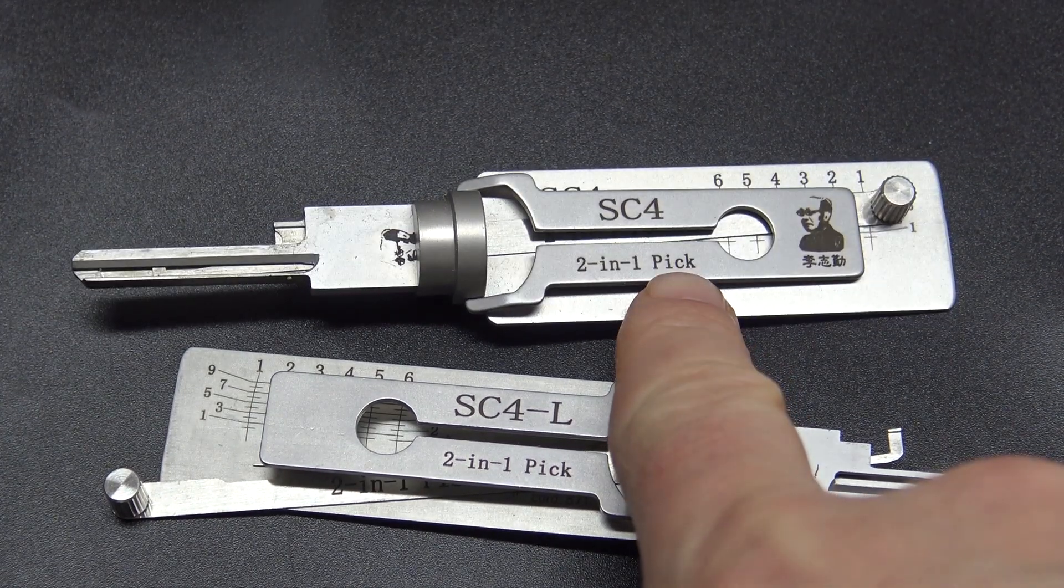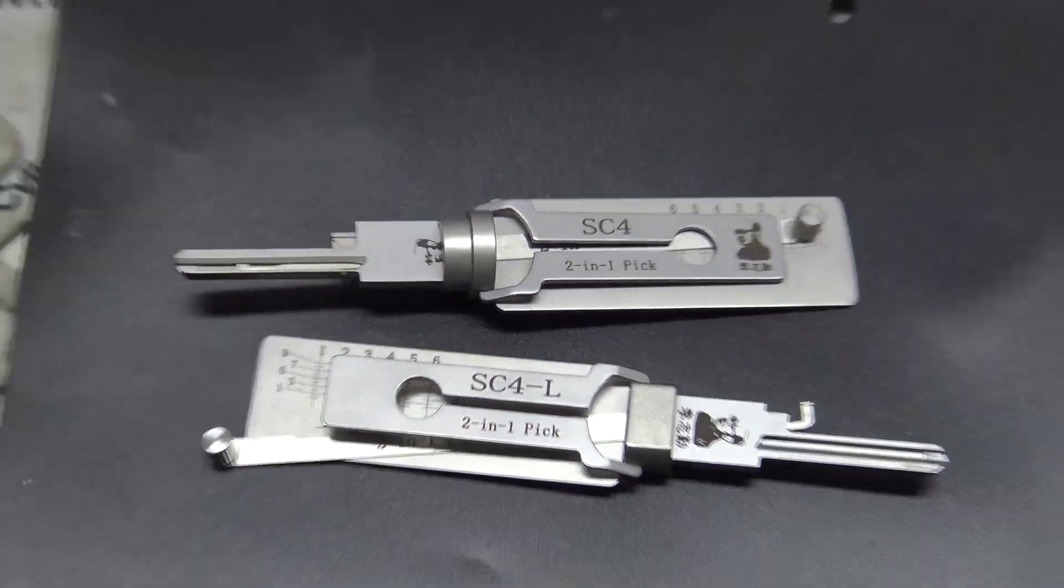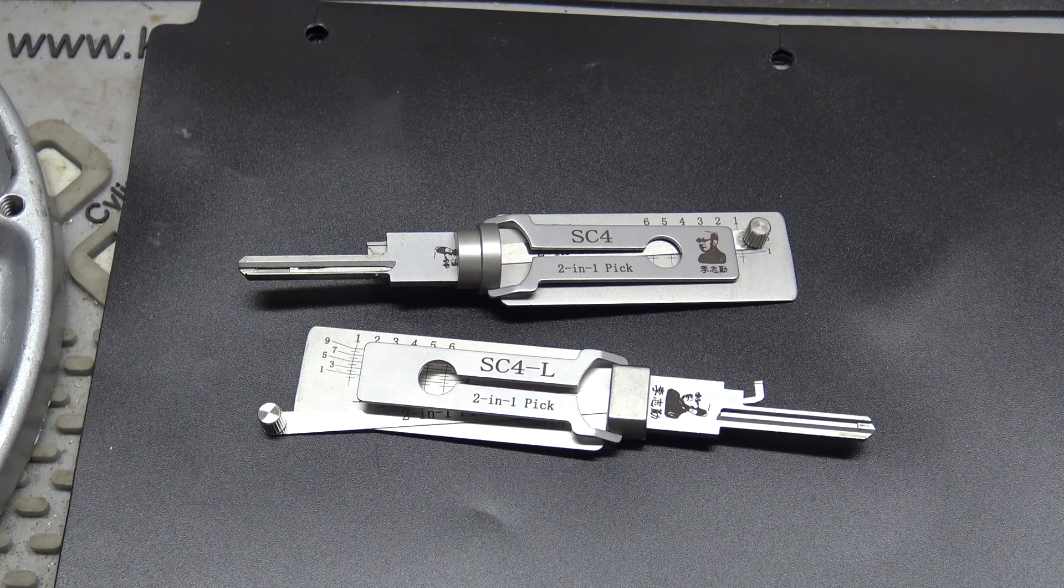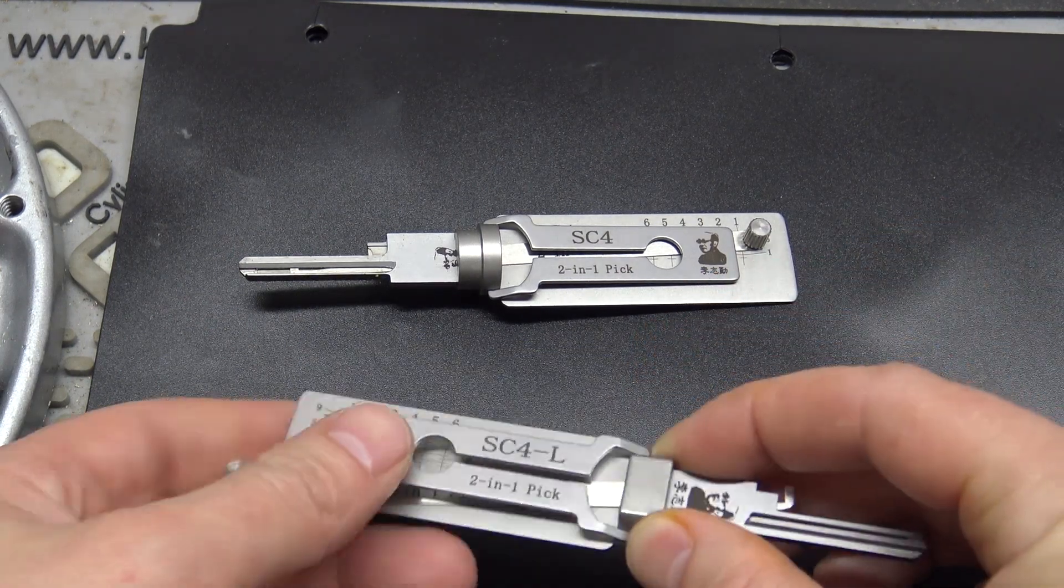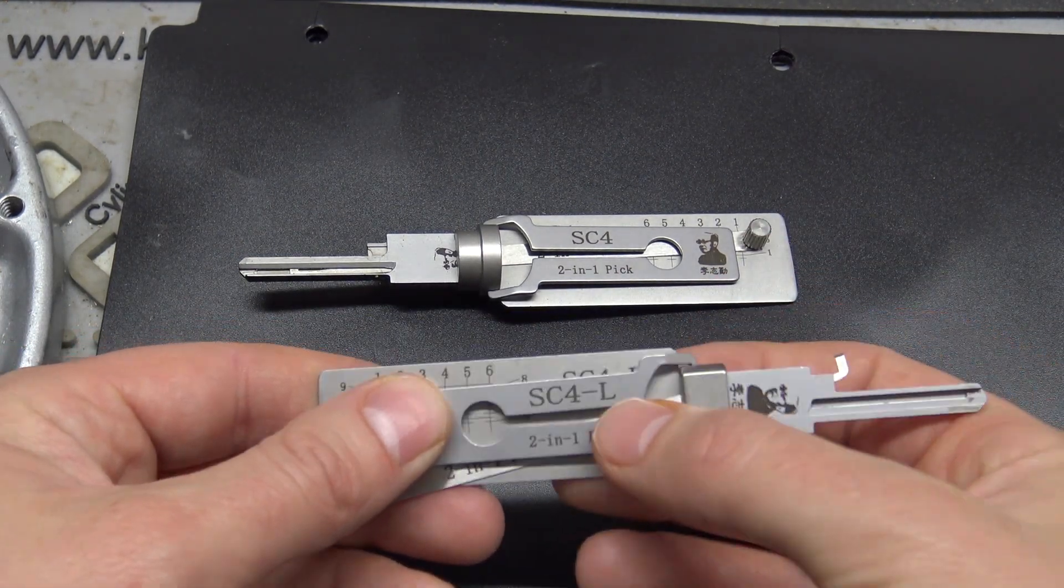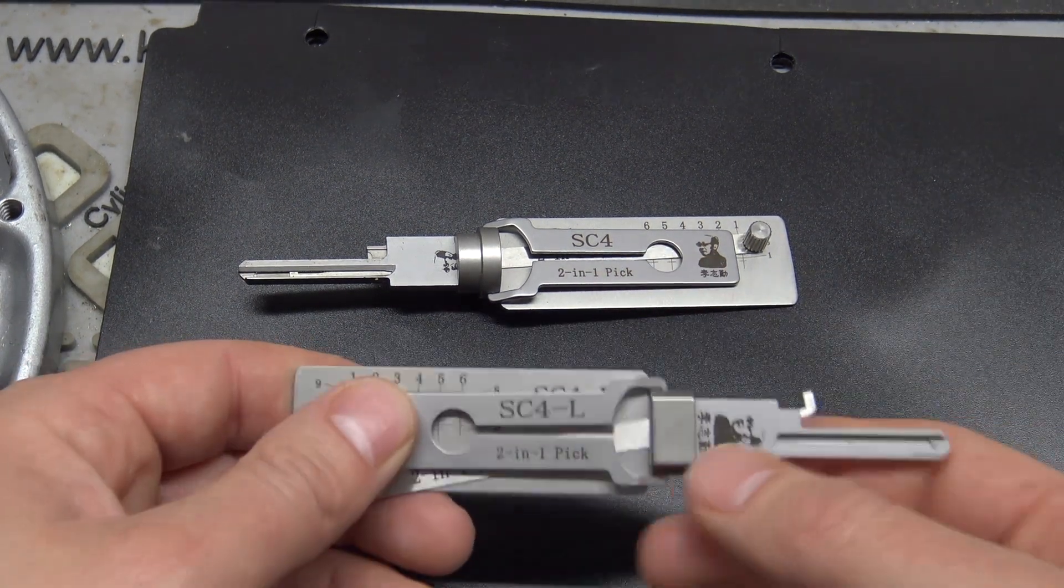And compare it to the old SC4 Lishi, which these are both for the Schlage C keyway, the 6-pin version. A couple of things that you notice here looking at these that are different. Of course, there's an L. There's not an L on that one.